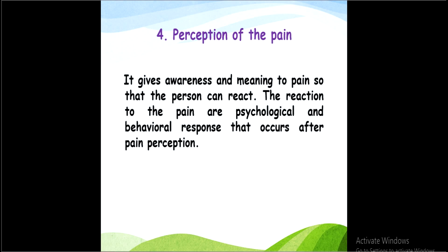The fourth stage is perception of pain. It gives awareness and meaning to the pain so that the person can react. The reactions to pain are psychological and behavioral responses that occur after pain perception. As the brain receives the information and modulation occurs, pain perception happens, which makes us aware that we are in pain, and triggers psychological and behavioral changes.